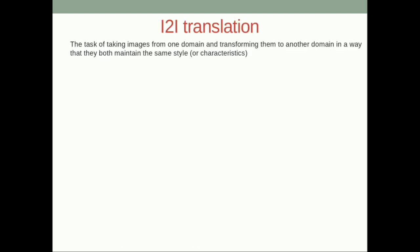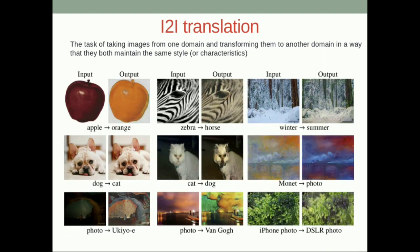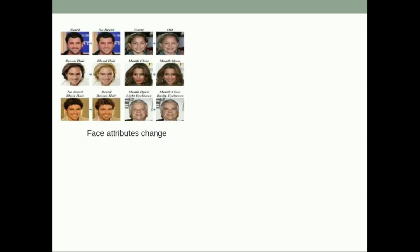Image-to-image translation means translating images from one domain to another domain. For example: apples to oranges, zebra to horses, winter to summer, cat to dog, and iPhone photo to DSLR photo. The task is taking a set of images from one domain and translating or transforming them into another domain while maintaining the same style or characteristics.